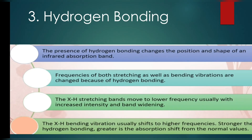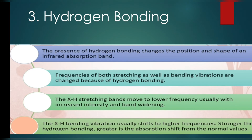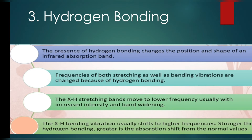The third factor is hydrogen bonding. The presence of hydrogen bonding changes the position and shape of an infrared absorption band. Both stretching and bending vibration frequencies are changed by hydrogen bonding. The X-H stretching bands move to lower frequency, usually with increased intensity and band widening.